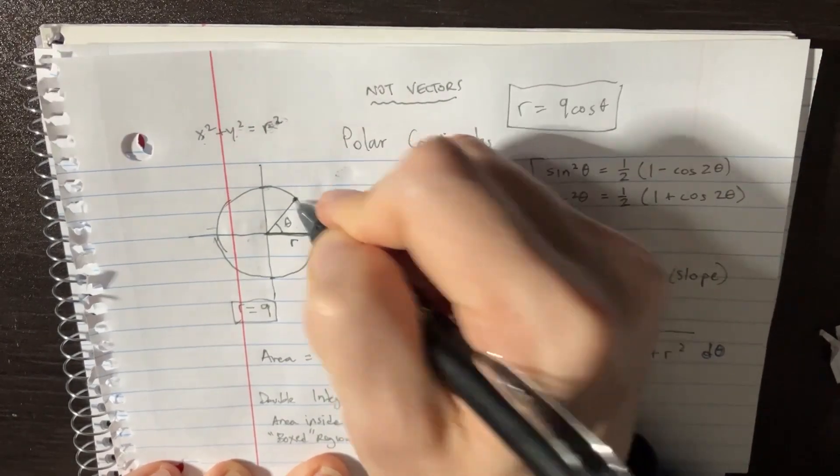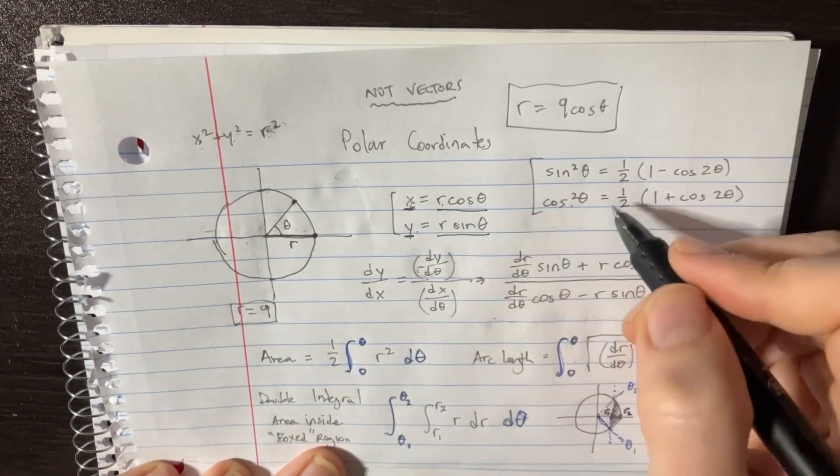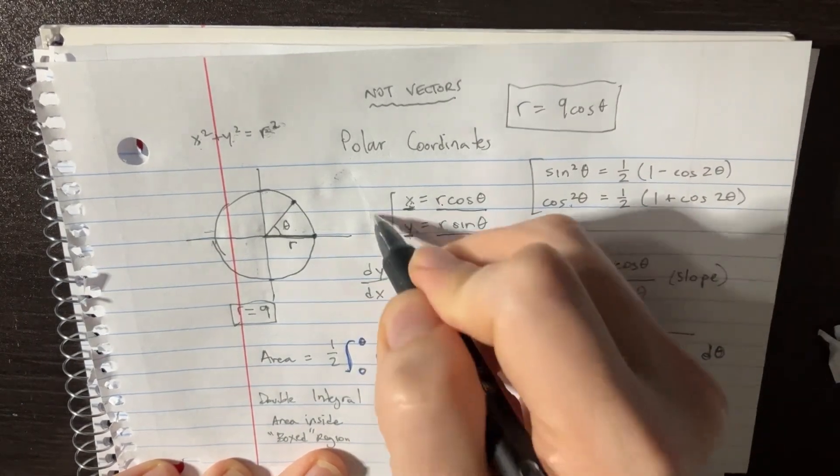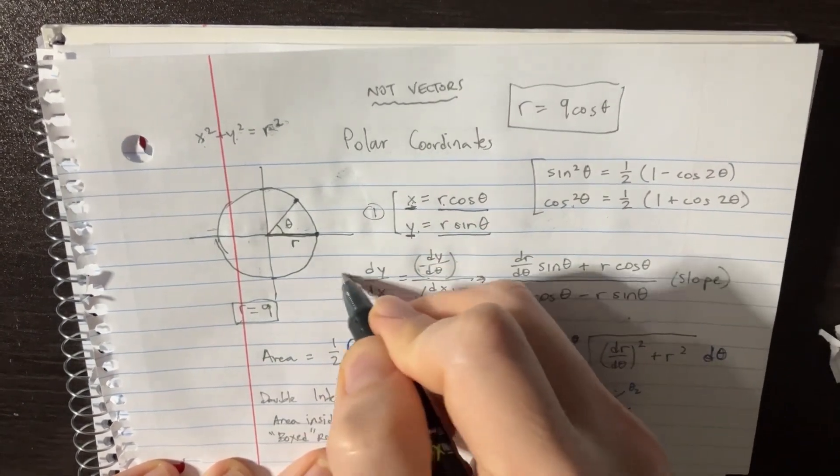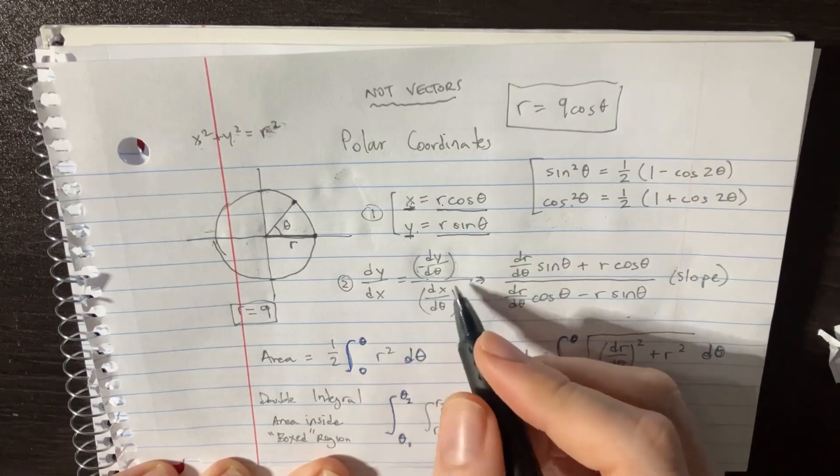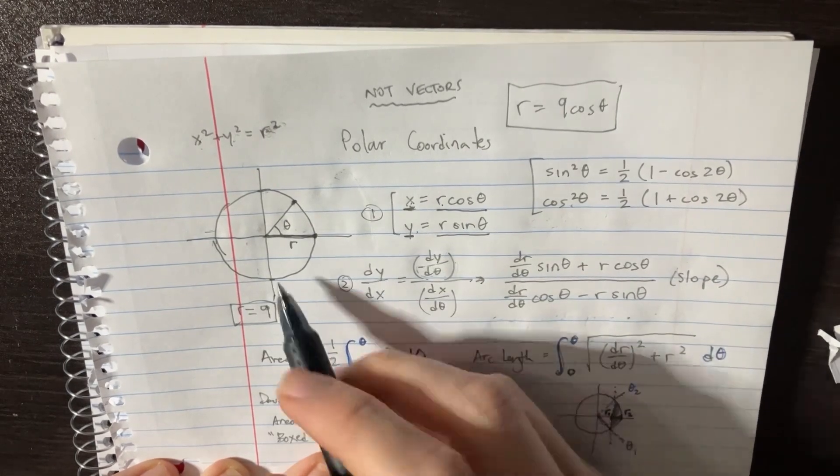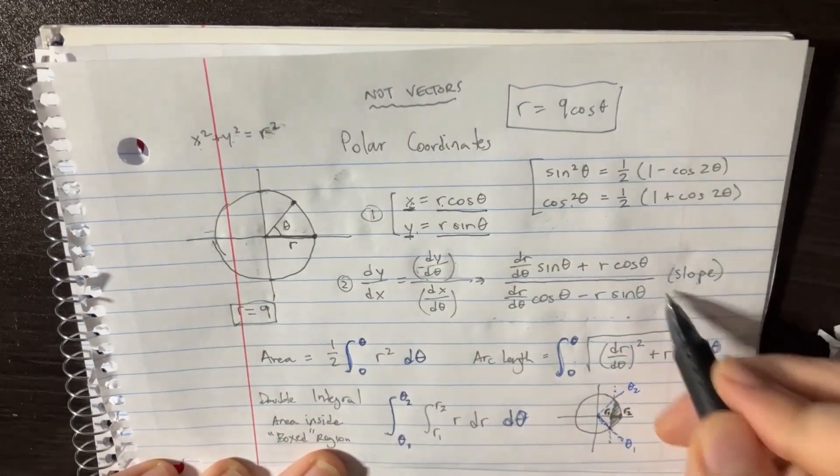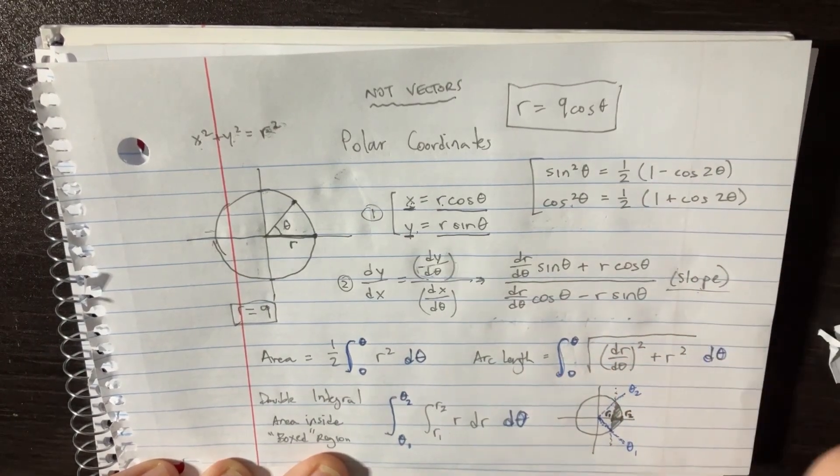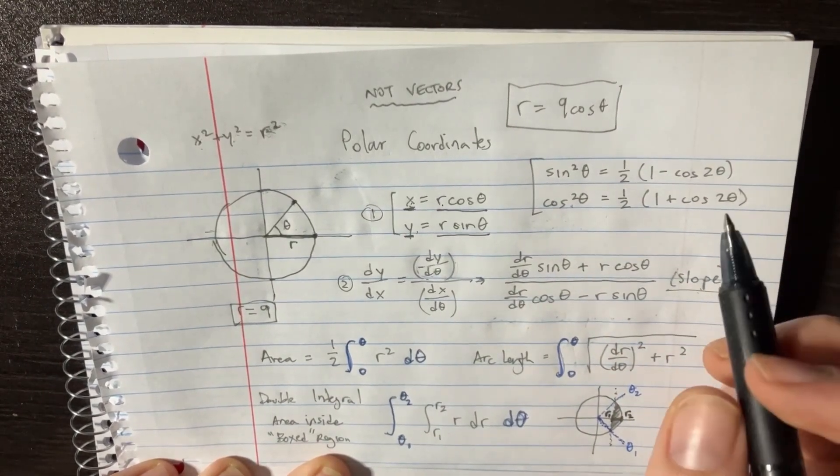Next thing we need to do, this is number one right here, number two is you need to know how to find the slopes. So the slope is just dy over dx as usual. A slope will help you find things like specific tangent lines.